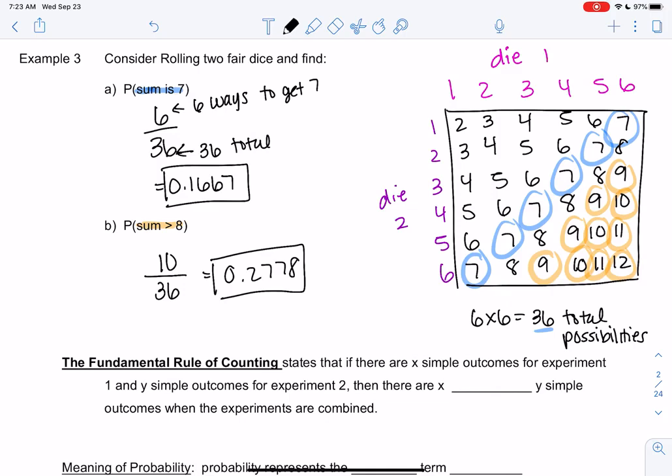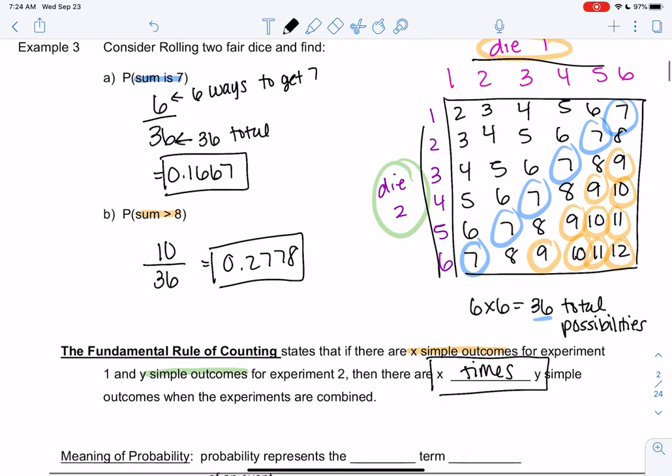And then 10 out of 36 gives me 0.2778. So for two dice, this is a good way to organize them, is making a table. And then how did I come up with 6 by 6? It's because there were 6 on each side. That's called the fundamental rule of counting. It states that if we have x simple outcomes for experiment 1, so this would be experiment 1, and we have y simple outcomes for experiment 2, that would be this one, then the total possibilities are x times y. So they don't have to both be the same number. We could have had a 6-sided dice and a 4-sided dice. But that's how I came up with 6 by 6.